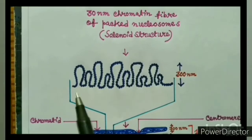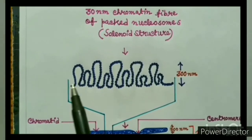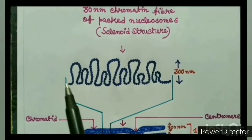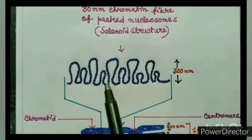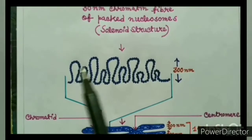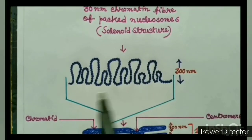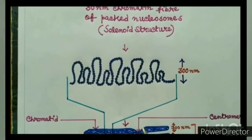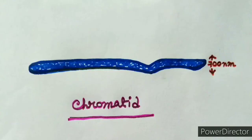This 300 nanometer structure forms a series of loops that can vary in length. Further condensation of this 300 nanometer chromatin leads to the formation of a chromatid, which is part of the chromosome and is 700 nanometers in diameter.